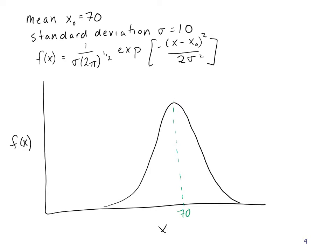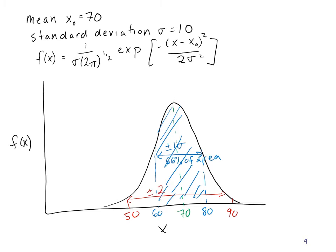And then if I go plus or minus 10 on each side, so about there and there between 60 and 80, this is plus or minus 1 sigma, and that gives me 66% of the area. So this area between 60 and 80 is 66% of the people on this test got some score between 60 and 80. And then if I go out another standard deviation to 50 and 90, well this is plus or minus 2 sigma, and that gives me 95% of the total area under the curve.